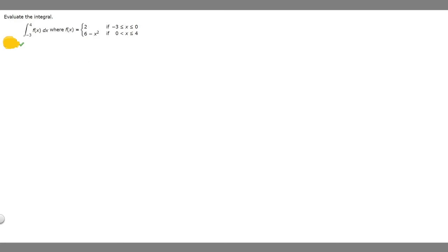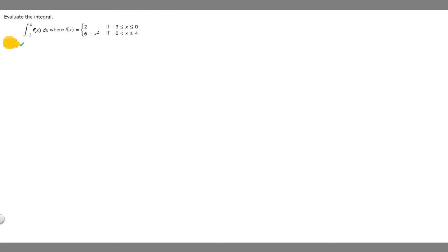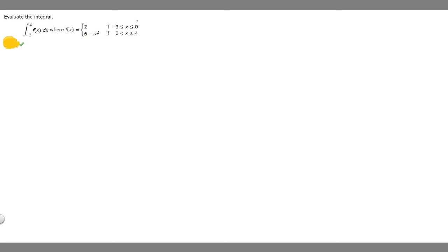How do we solve this? It's a piecewise function. So if you have a piecewise function, what you want to do is take your integral and split it into two different ones, and you're going to make a distinction when they switch values. Here our function splits into two different ones at 0.